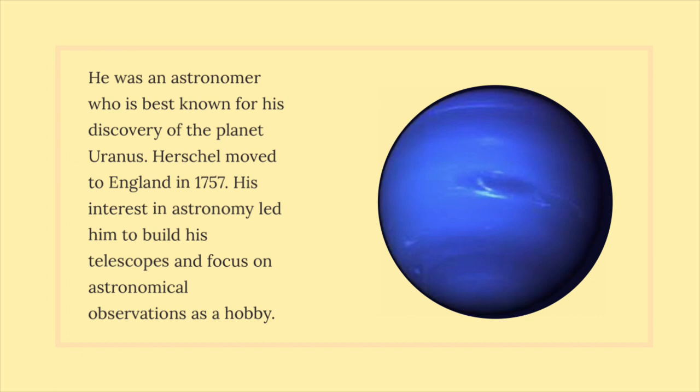He was an astronomer who is best known for his discovery of the planet Uranus. Herschel moved to England in 1757. His interest in astronomy led him to build his telescopes and focus on astronomical observations as a hobby.